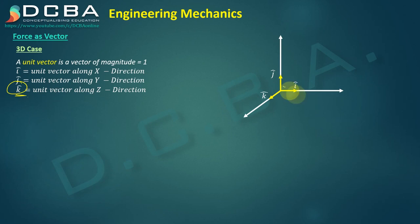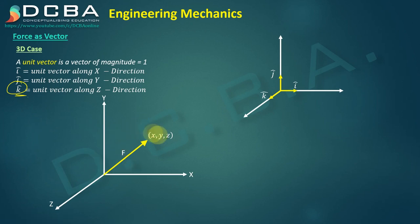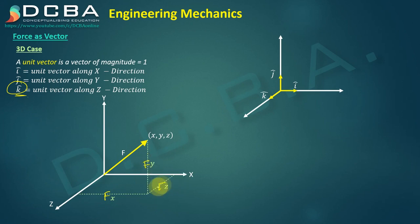Now if a force is inclined in space, its components are: the horizontal component FX, the vertical component FY, and FZ. These are your three components of force F.